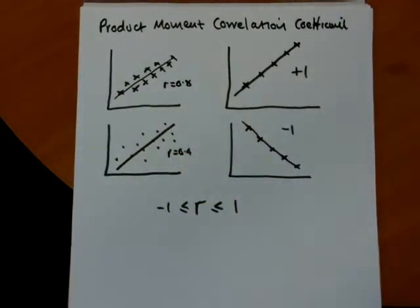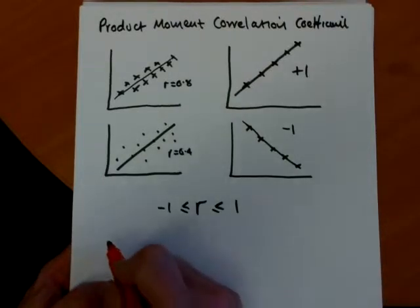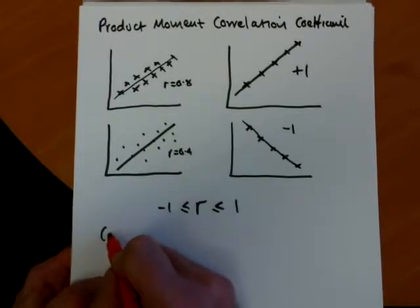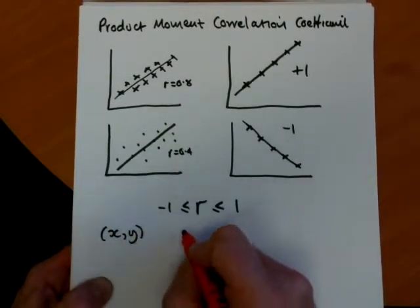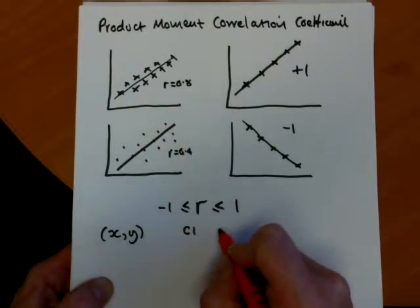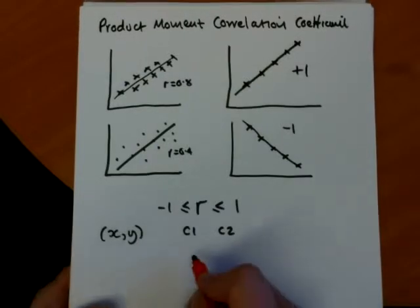So what we learn in this chapter on the product moment correlation coefficient is how to calculate and interpret the coefficient. So we are looking at what's called bivariate data. So each bit of data has two parts to it. It could simply be the score you got in C1 and C2 out of 75.